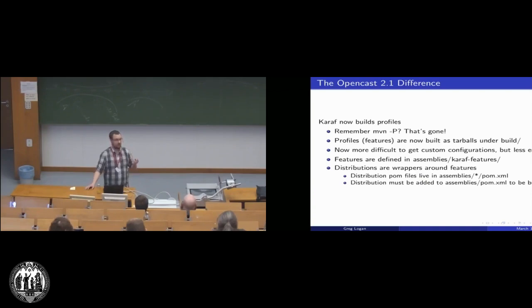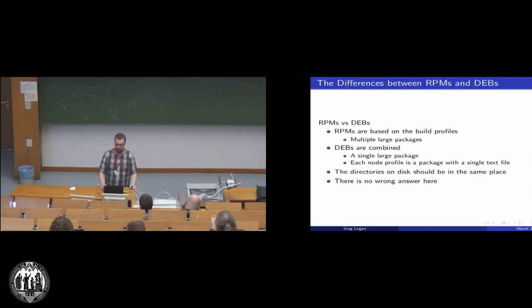A distribution is a profile, is a feature. I think these are actually decoupled, but I think the way that we're using them, it's basically one-to-one. That's what it appears to be. And that's where you'd actually go in to actually add a new feature or profile or distribution. It would be under the assemblies directory. If you go in that directory, you'll see the different distributions that are going to come out in your build directory.